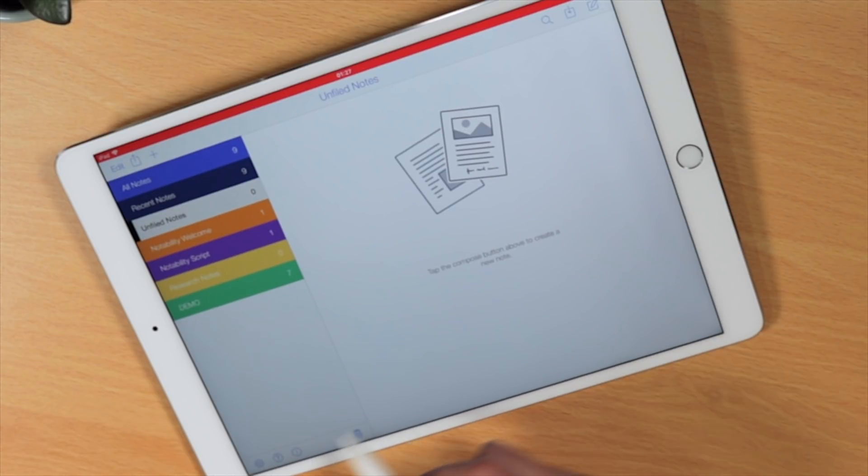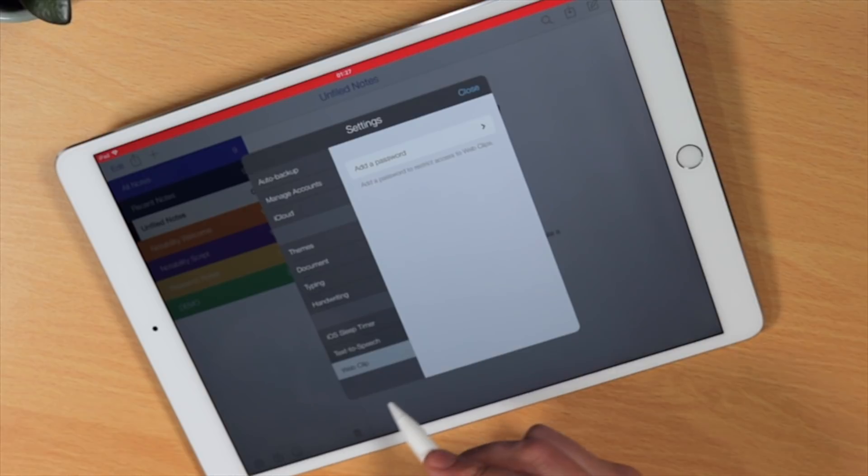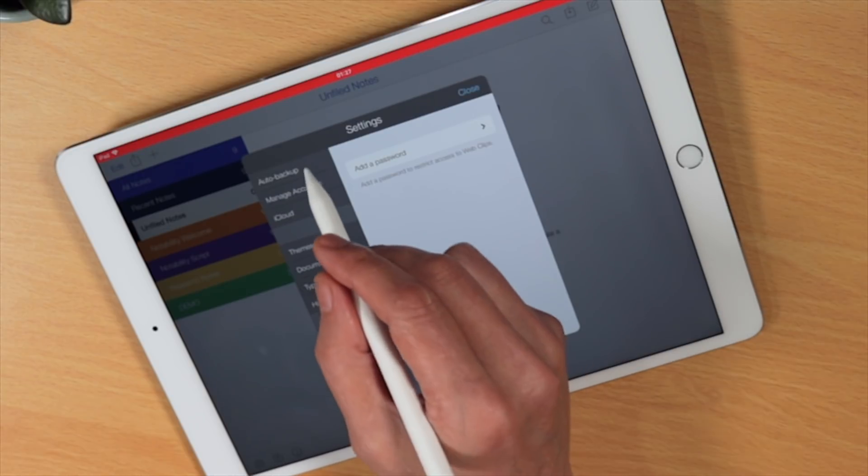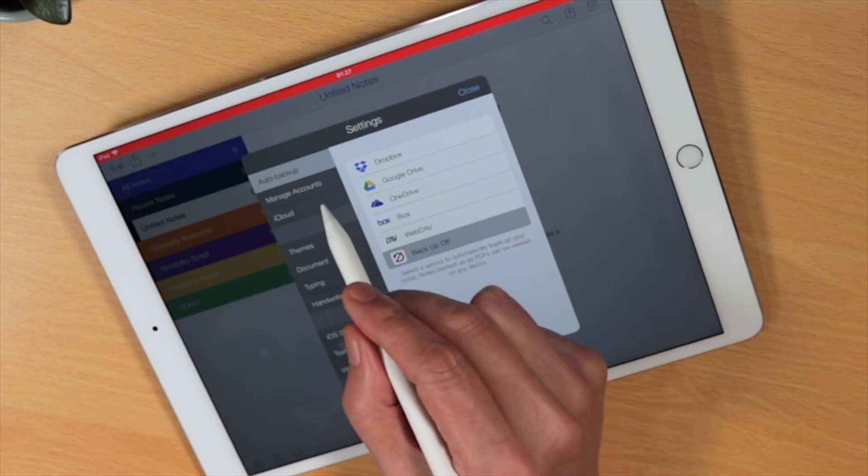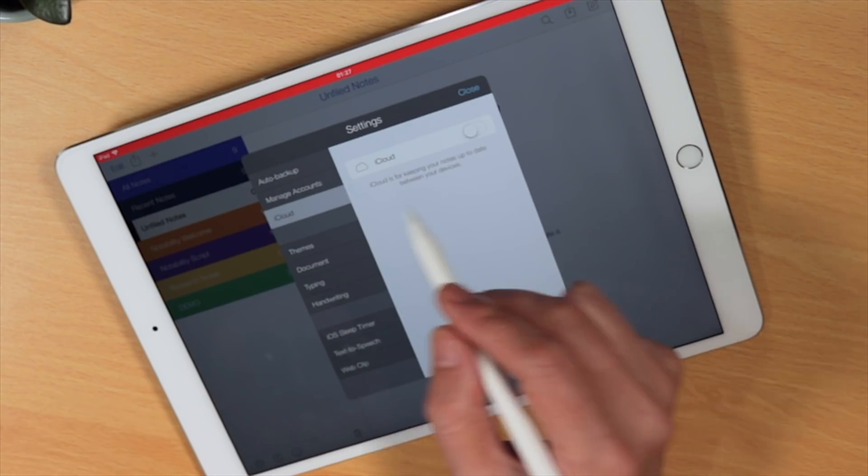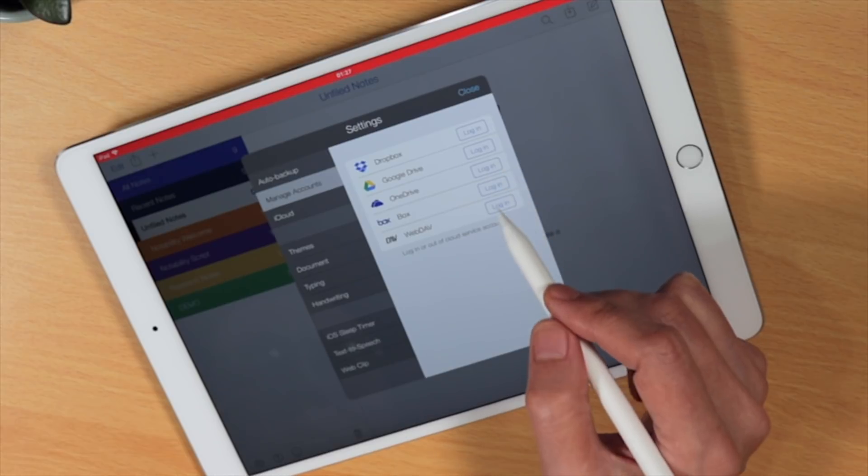simply tap the settings icon located on the bottom left-hand corner of your screen. Choose where to automatically store your notes, as shown here, or my personal favorite is iCloud. Manage your cloud accounts by simply logging in or out of the following cloud services shown here.